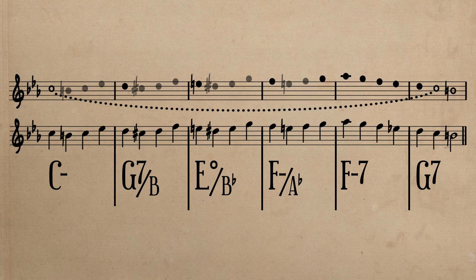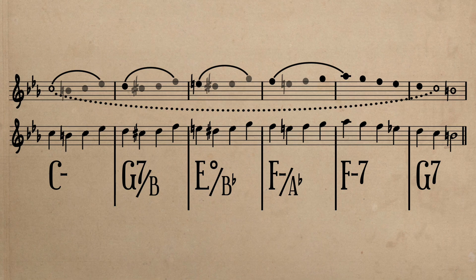which is done for the sake of delaying the arrival of A flat until the following measure. With this layer added, we can also see a series of unfolding thirds which are commonly used to embellish an ascending or descending line.